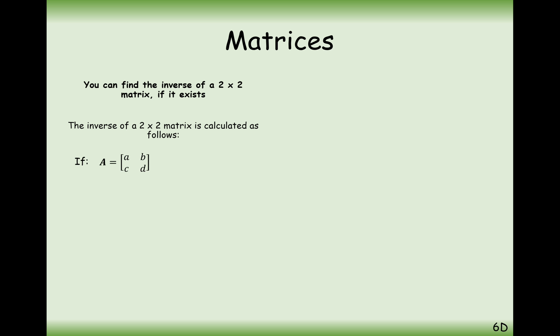If we start with a matrix ABCD, then the inverse of that matrix is 1 over (AD minus BC) — that value is the determinant — multiplied by a new matrix. Inside that matrix, A and D swap round, while B and C stay where they are but become negated. So every cell has something to do: it's either a swap or it's a negate.